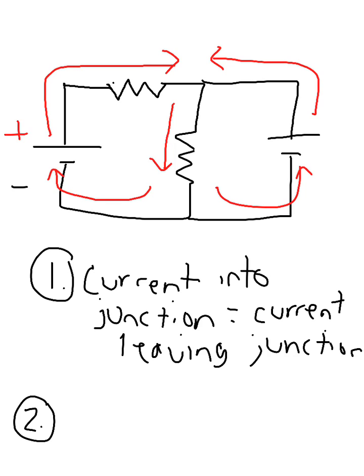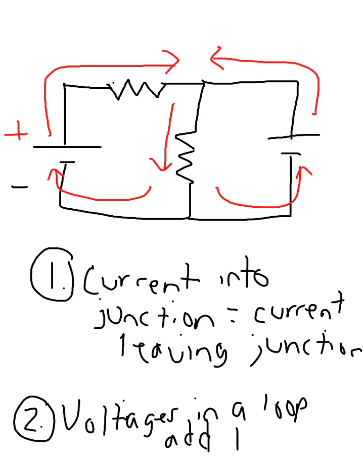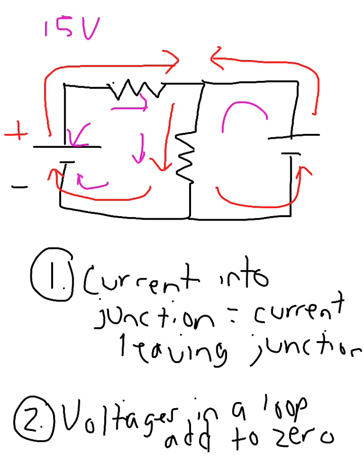Kirchhoff's second rule is that all the voltages in a loop add to zero — or you could say they basically cancel out. Think of it as: this battery has a certain amount of voltage, say 15 volts. That voltage is going to get used up by the resistors, and then it goes back to the battery having used up all the voltage. Really, think of it as conservation of energy — energy is conserved.